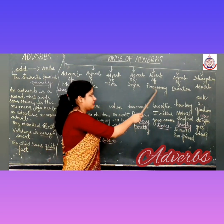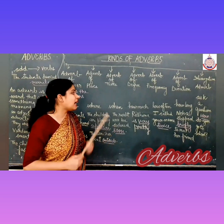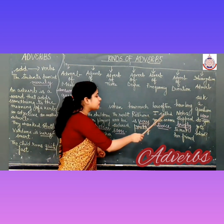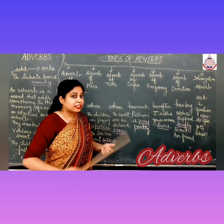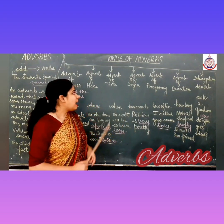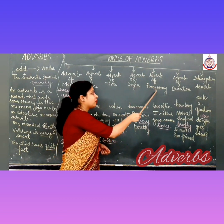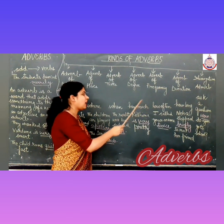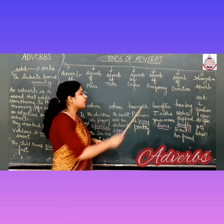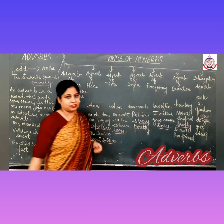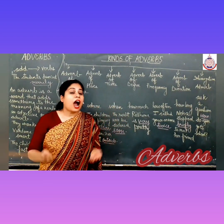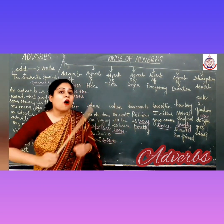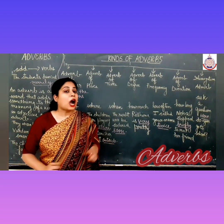Next, adverb of frequency. Adverb of frequency answers the question 'how often'. For example, I called your name twice — how many times? Twice. Now don't get confused between adverb of degree and adverb of frequency. Adverb of degree answers 'how much' — for example, I almost fell. Adverb of frequency answers 'how often' — for example, I always speak truth.